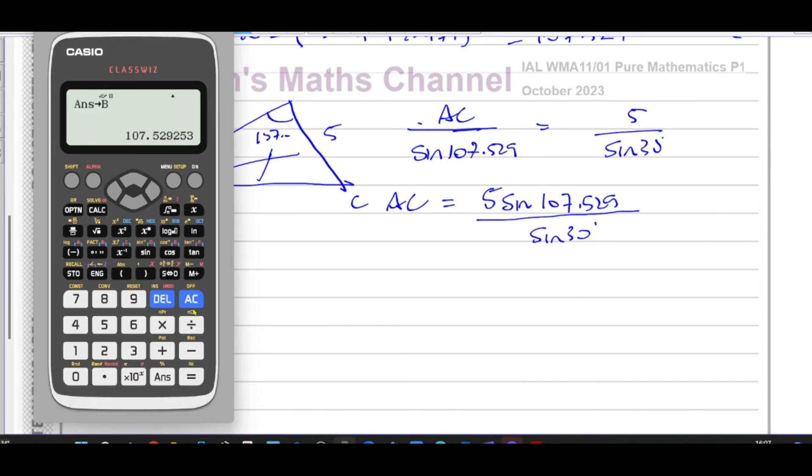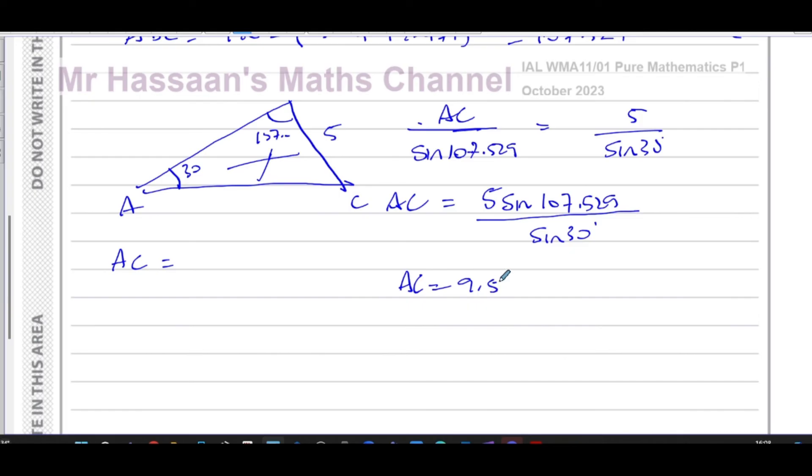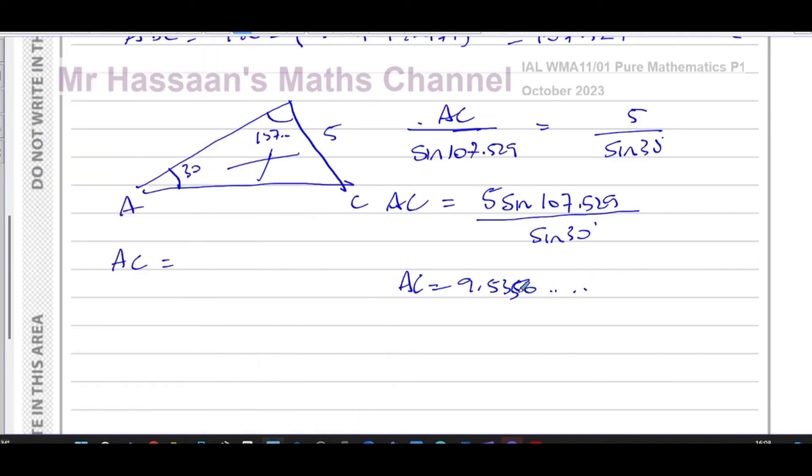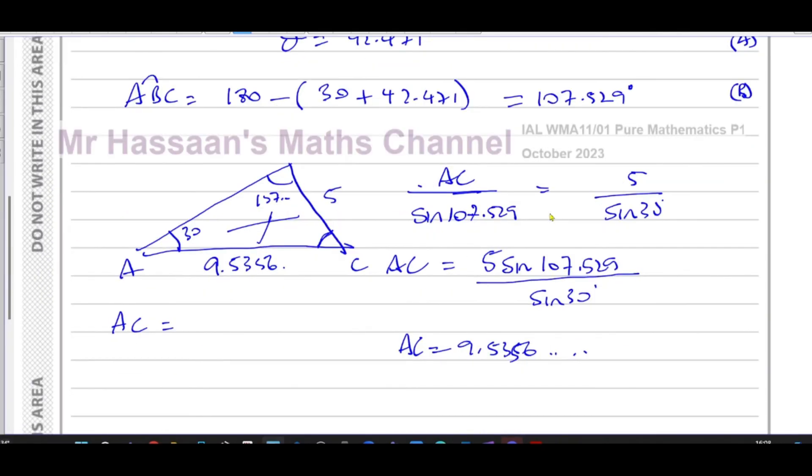Don't call it x. There's already an x in your question that refers to something else. So that will give me the length of AC. So I'm going to have now, I have five times the sine of what I stored as B, divided by the sine of 30. So that should give me my answer. That's 9.5356. So that's the length AC, 9.5356. I know this angle already is 42 point something, was it 42.471. Now I can use my area and finally get to the answer.